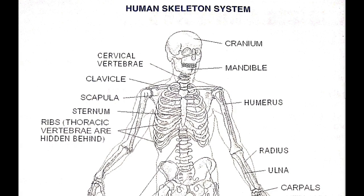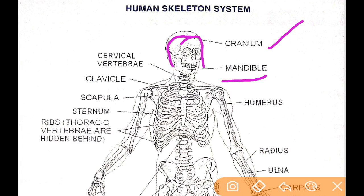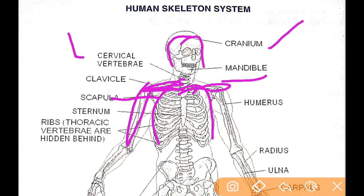Looking at the skeleton parts: the head part is called the cranium; the lower jaw is called the mandible. There is a cervical vertebra in the neck. The clavicle is the shoulder blade — a flat horizontal blade-like bone at the shoulders. The scapula joins the forelimbs. The sternum is in the thoracic cavity and gives support to the lungs and heart.